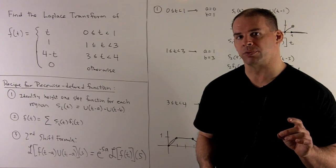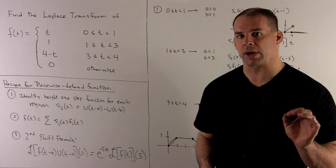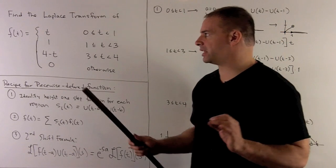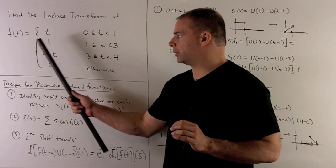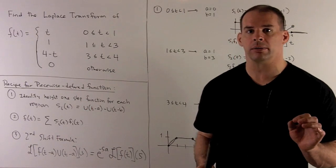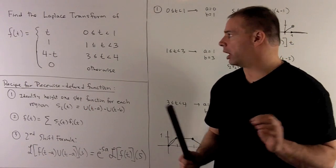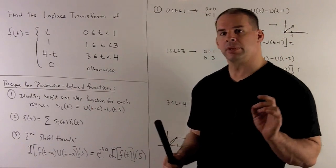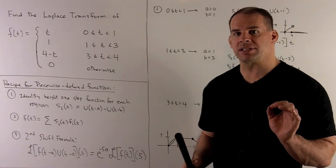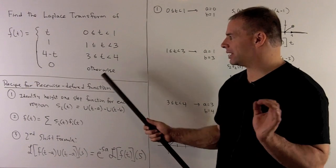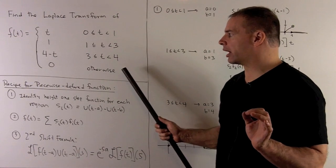Find the Laplace transform of the piecewise defined function f of t, equal to t between zero and one, one between one and three, four minus t between three and four, and zero elsewhere.